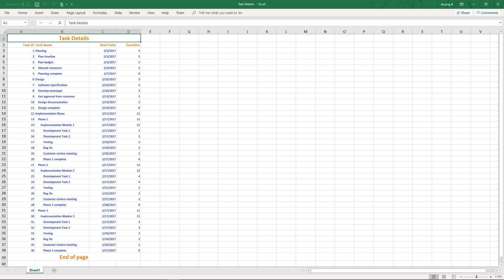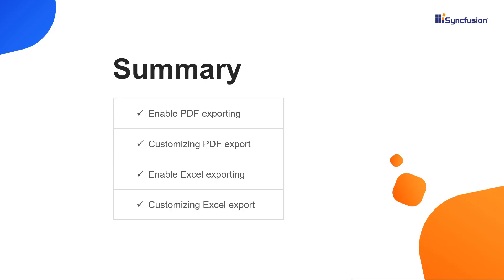For more information about the tree grid exporting APIs, please refer to our online documentation link provided in the description. Finally, let me summarize: I have explained the steps to enable PDF export, customize the PDF document before exporting, and do the same for Excel exporting. You can download the featured sample from the link in the description with the label 'complete sample'. If you found this video useful, click the like button and subscribe to our channel to get notified of our new videos. Thanks for watching.